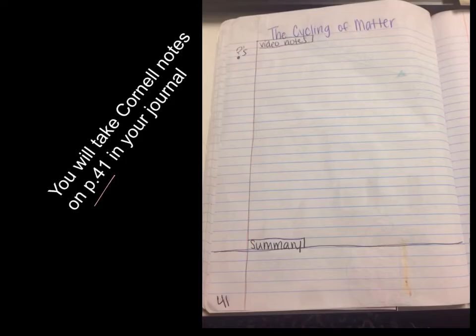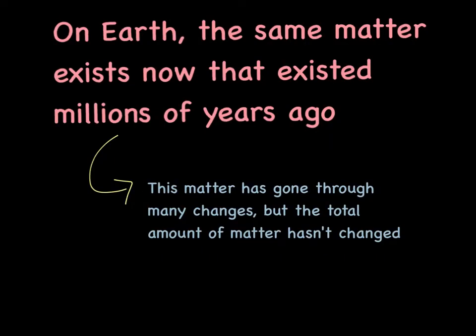We are going to take some Cornell notes on page 41 in your journal, so make sure that you are on page 41 and get everything set up properly. The first thing we need to look at is that on our earth, the same matter exists now that existed millions of years ago.